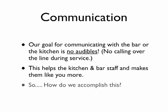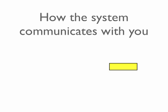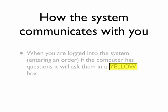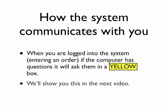So how do we accomplish this? In the next couple of videos, we're going to go through how the system communicates, but we'll start by saying that when you're logged into the system or entering an order, if the computer has a question, it will ask it to you in a little yellow box, which is in either the upper right or upper left corner of the screen. We'll show this to you in the next video.